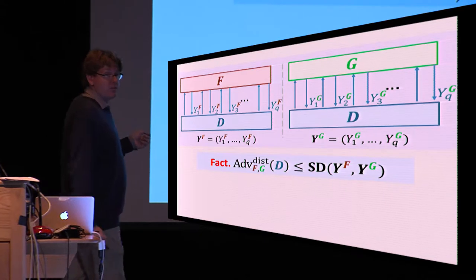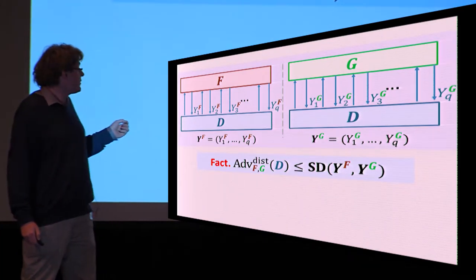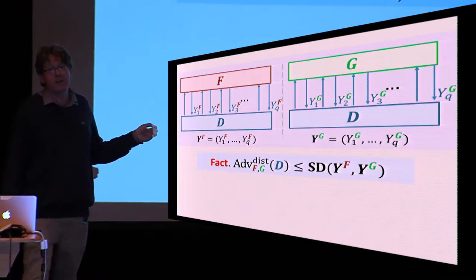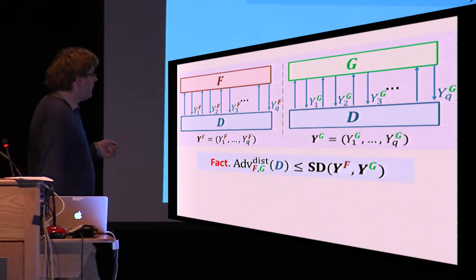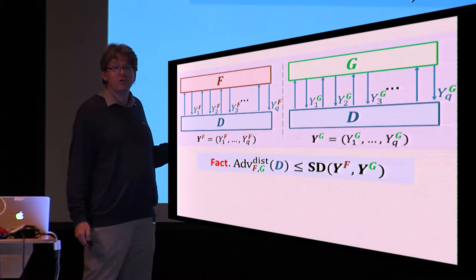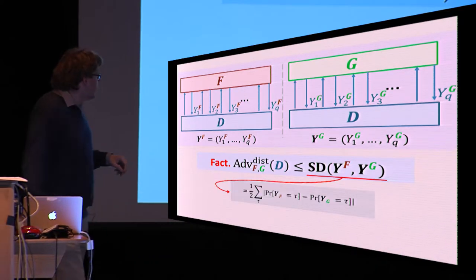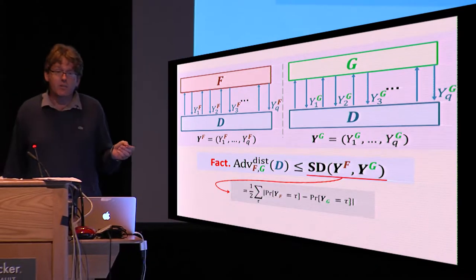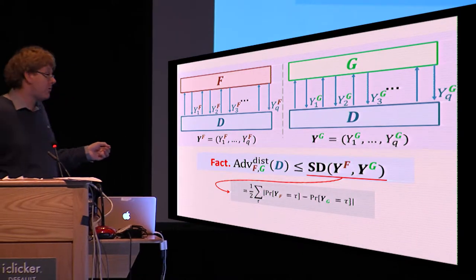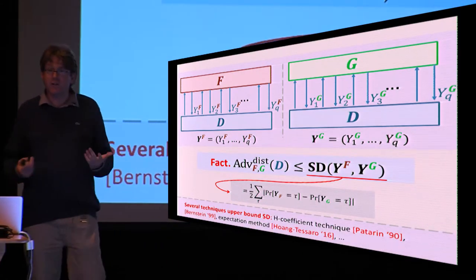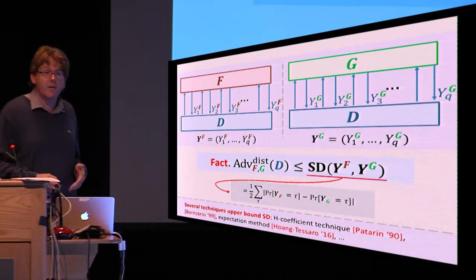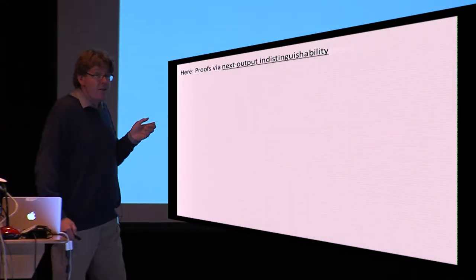Here is the point why we want to look at transcripts. What we know from previous works already is a simple observation that if you want to upper bound the distinguishing advantage of d, you can do so by the statistical distance of the transcripts. In fact, this bound is tight if the distinguisher chooses its bit optimally. Statistical distance is just one-half the L1 distance between the probability distributions. This observation has been explored in numerous frameworks for indistinguishability proofs, in particular in the H-coefficient method.